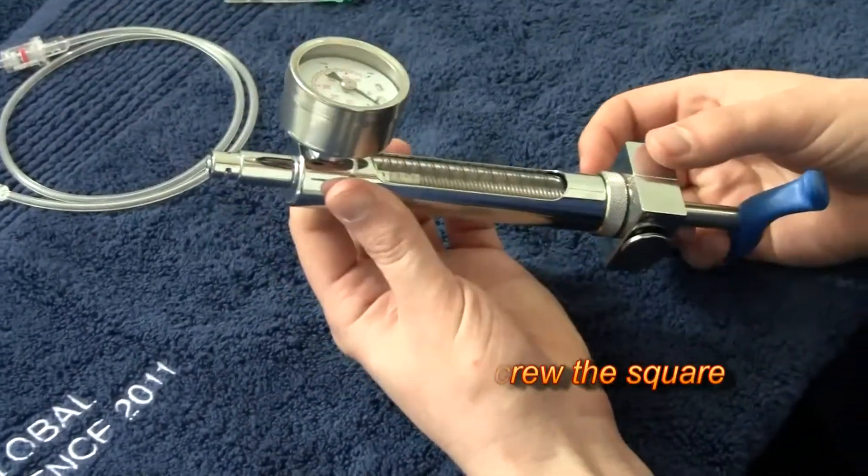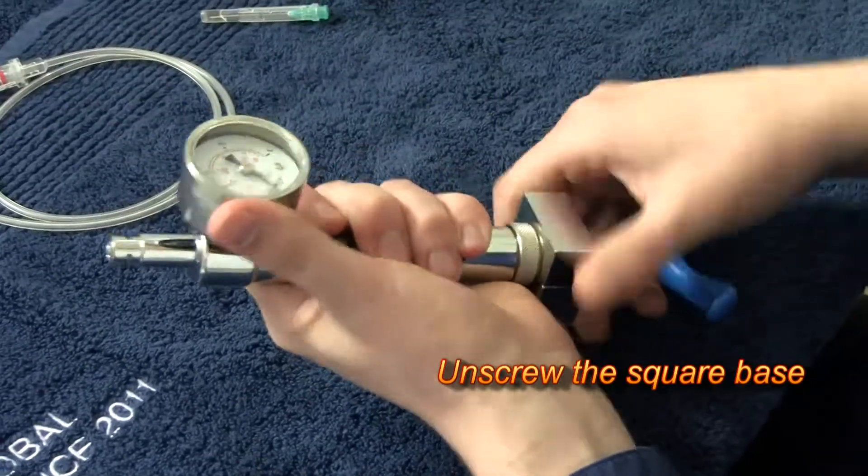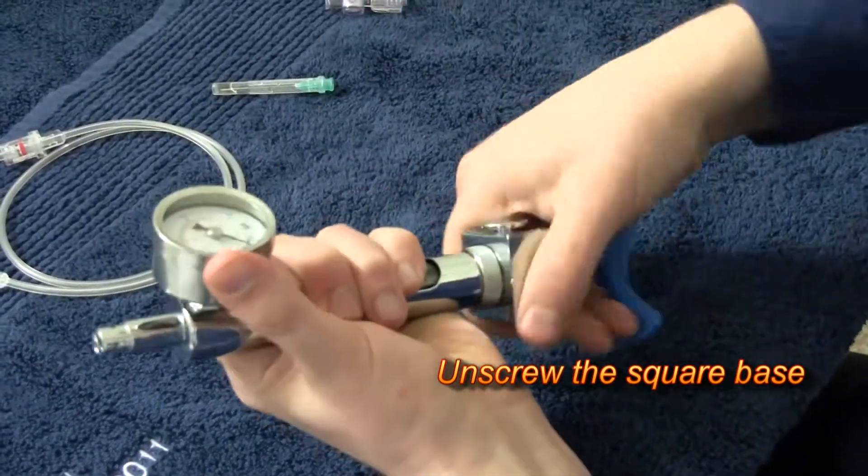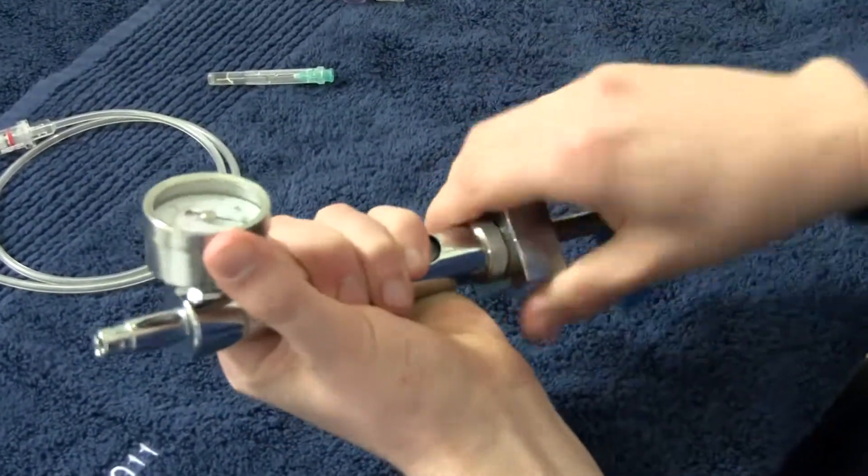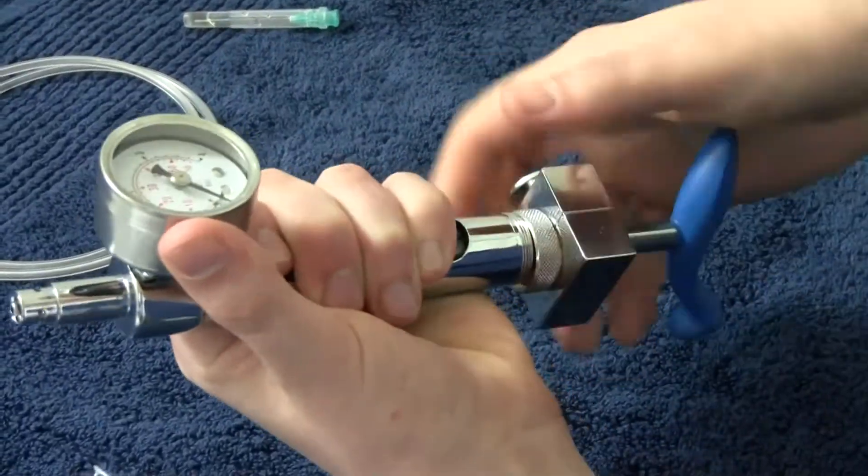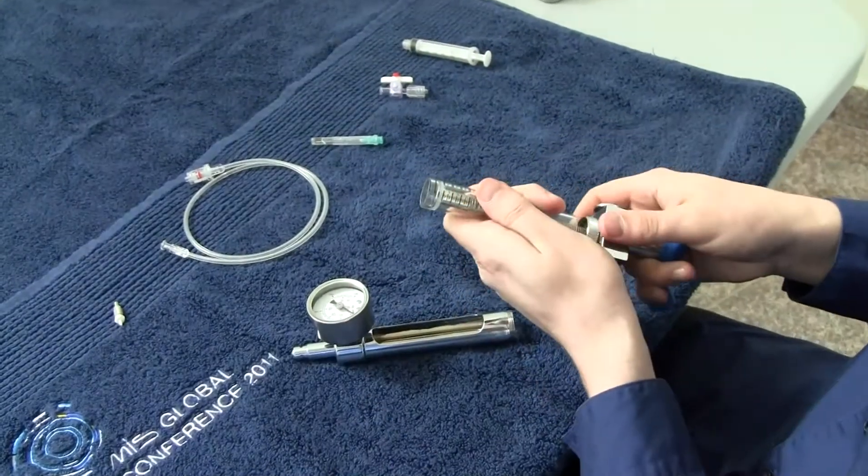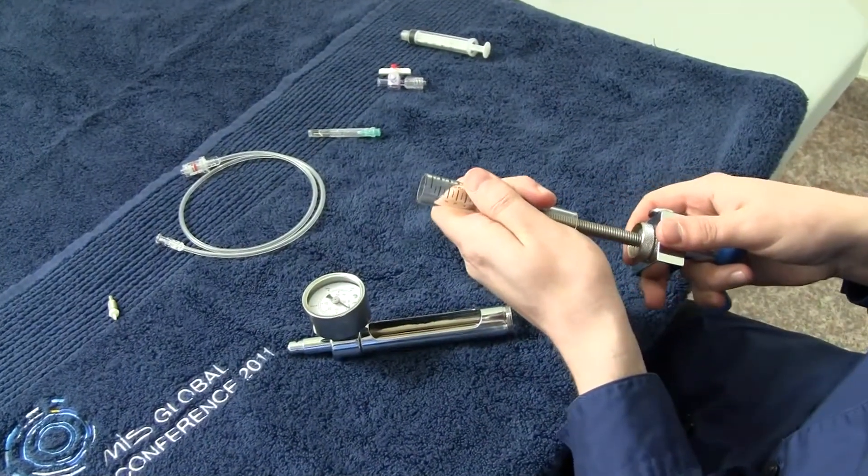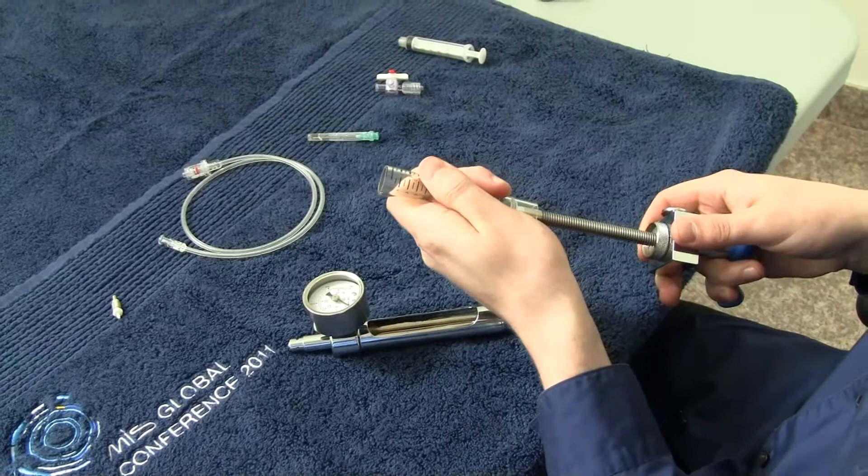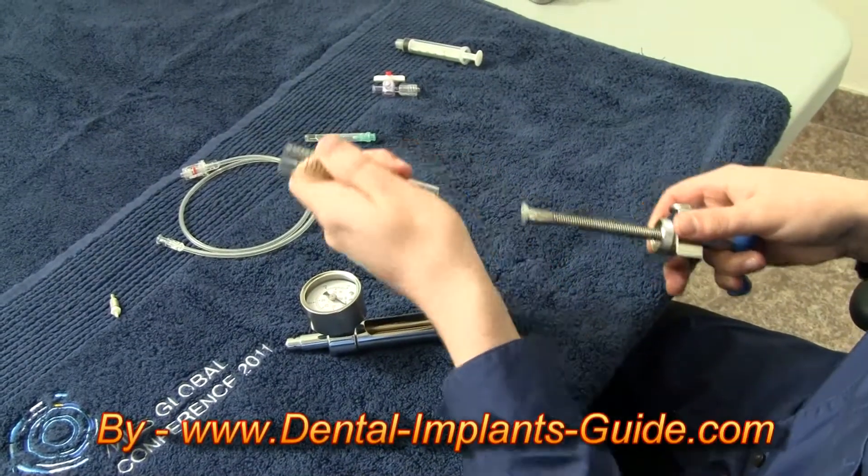Disassemble the end deflator into three parts by unscrewing the square base, then separating the glass tube from the plunger. Sterilize in autoclave.